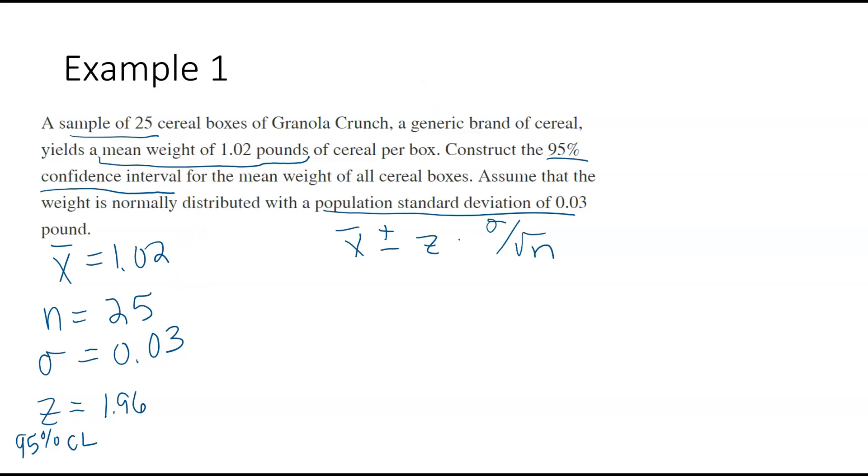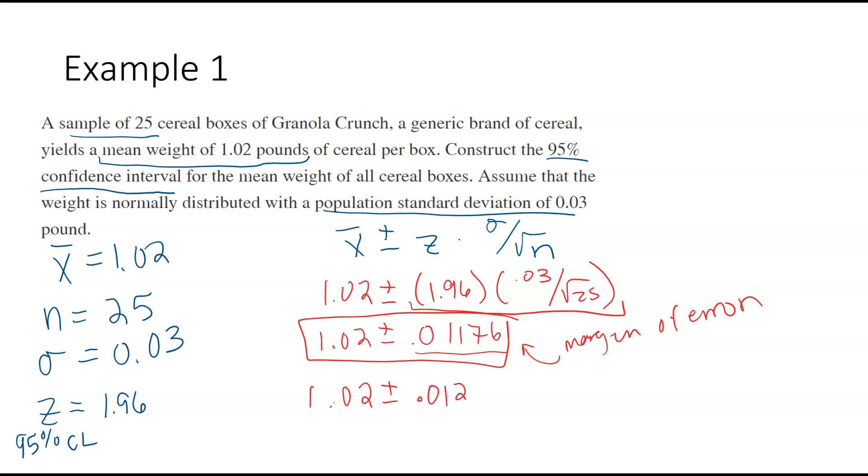So we'll say here that to find this confidence interval, we'll just plug in. When you're calculating this, you want to calculate the margin of error first. So you'll type this into your calculator first and you'll end up with 0.01176. So this right here is our margin of error. And then if we want the confidence interval, sometimes you can just leave it like this. We can round it here. We could say 1.02 plus or minus 0.012, and that could be the answer.